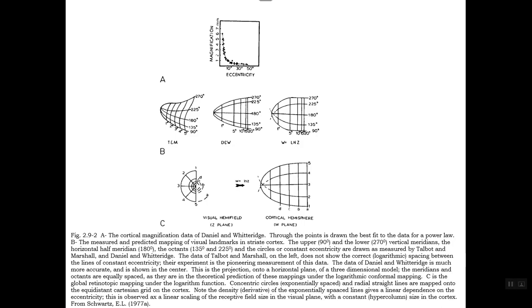Daniel Witteridge, a few years later, replicated it. You can see the degrees on the disk of the retina mapped as straight lines on the rectangular shape of the cortex. W equals log Z is the conformal map equation that Eric used. C and B has the visual hemifield in the Z plane that's mapping to the W plane, which is the rectangular hemisphere.